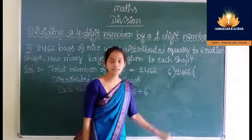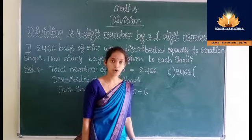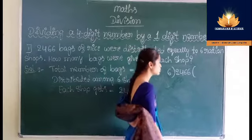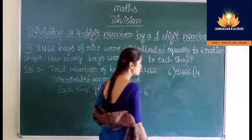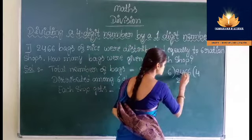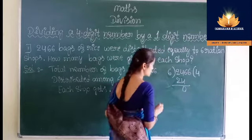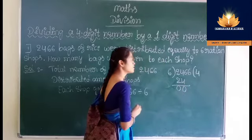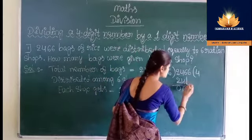Table of 6: 6 ones are 6, 6 twos are 12, 6 threes are 18, 6 fours are 24. Write 4 in place of the quotient. Then write 24 below this 24. Subtract: 4 minus 4 is 0, 2 minus 2 is 0. Then bring down the next number, that is 6.